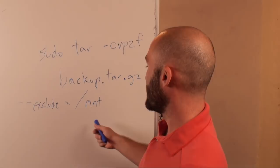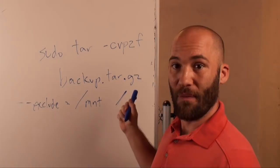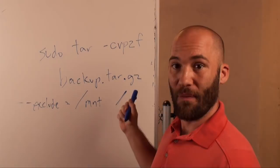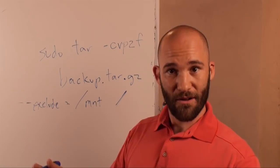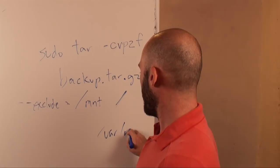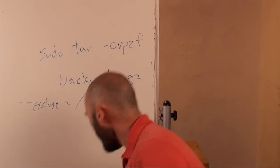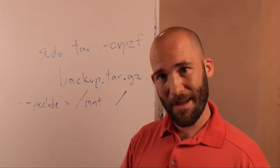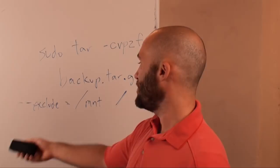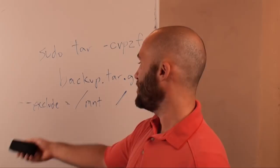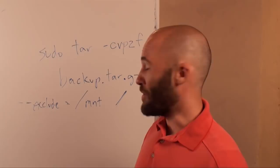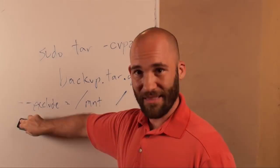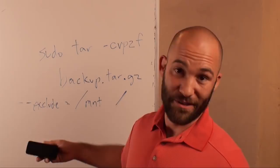Then finally, you say what you want backed up. Since we're backing up the entire system, we put root — this will back up root and exclude the mount directory. If you just wanted to back up your www folder, you could do /var/www and that would back up just your website. Be careful with the exclude command — if you make any mistakes, it will just include everything. Linux does exactly what you tell it to do. If you tell it to exclude a folder that doesn't exist because you messed up the directory path, it will just back up everything.